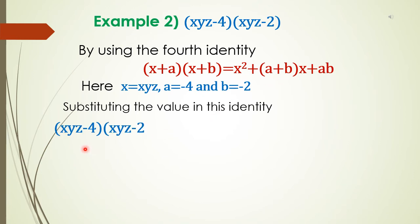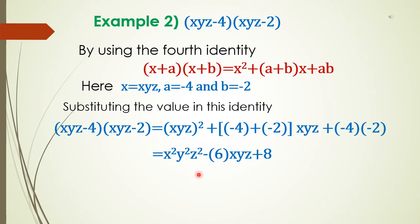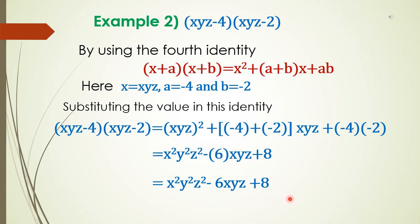Now substituting the values: (xyz)² plus (minus 4 + minus 2) into xyz plus (minus 4) into (minus 2), which is equal to xyz squared minus 6xyz plus 8. This is the answer.